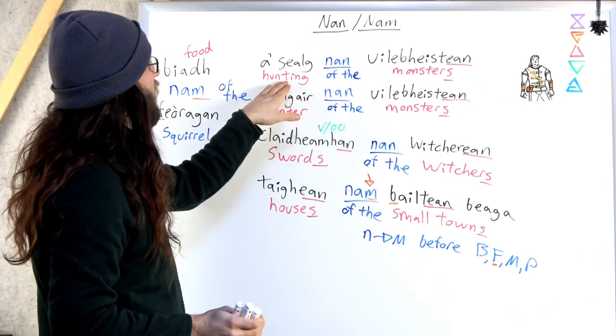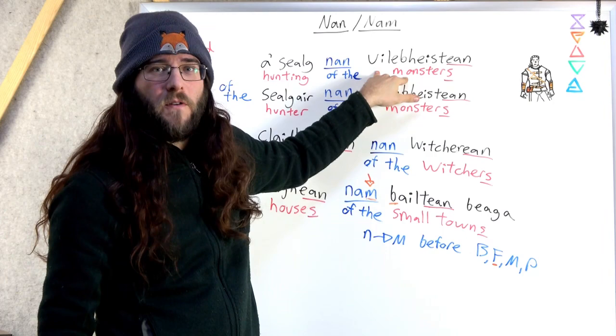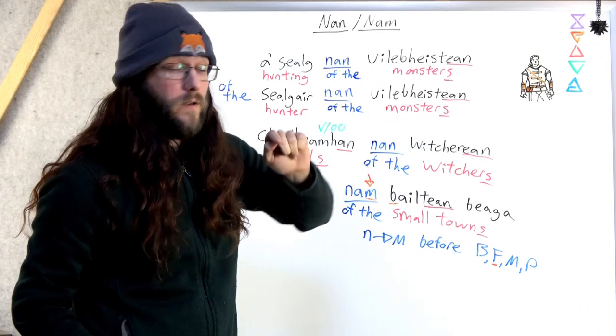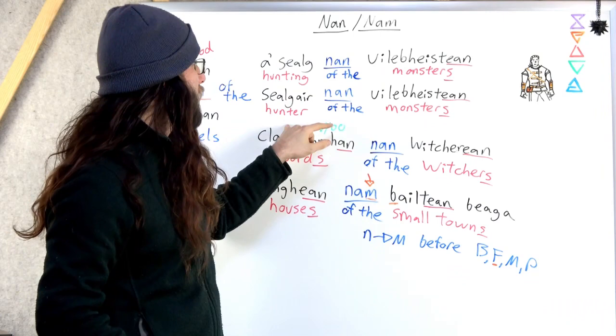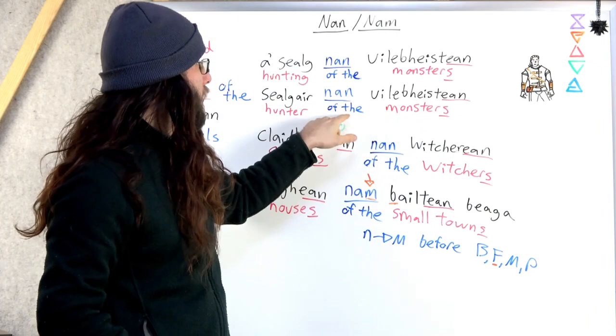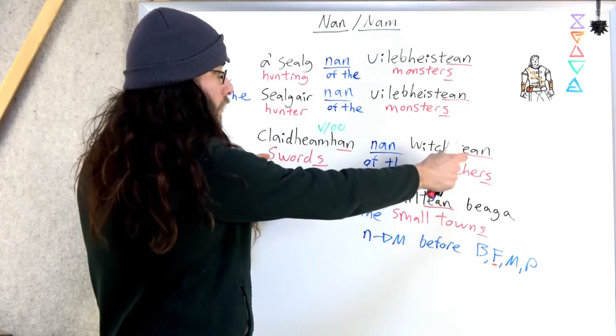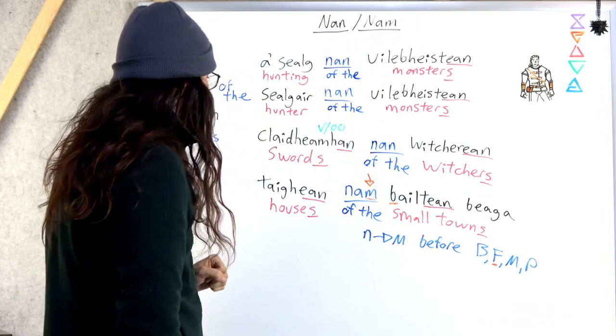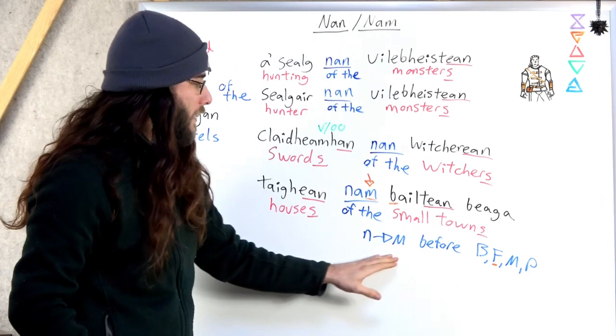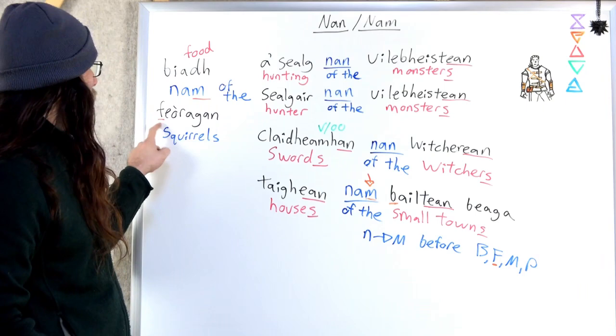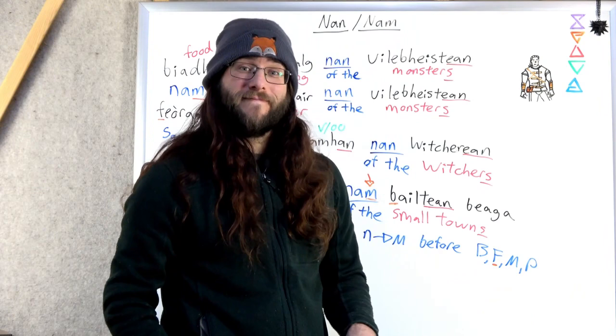So there we have it. Nan and nam. When you're connecting a verb with a plural noun, a definite plural noun, or a plural something that's definite, so it's something specific, like hunting of the monsters, it's the monsters, then you just put nan in between them. If you have two nouns, two things, and you want to connect them, and one of them is plural, you use nan again. Most of the time you're going to use nan. M before b, f, m, and p.